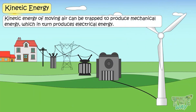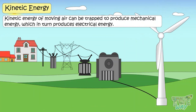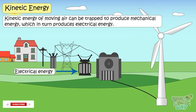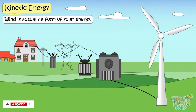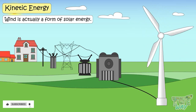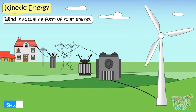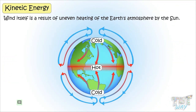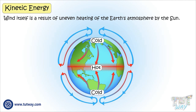Kinetic energy of moving air can be trapped to produce mechanical energy that in turn produces electrical energy. Did you know wind is actually a form of solar energy? That's because wind itself is a result of uneven heating of the Earth's atmosphere by the Sun.